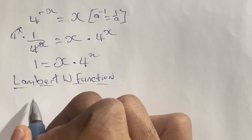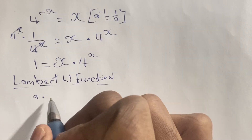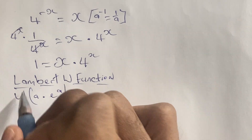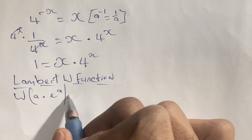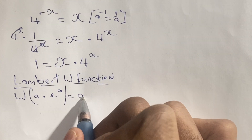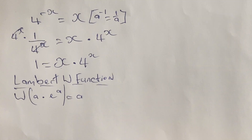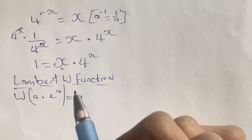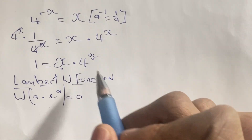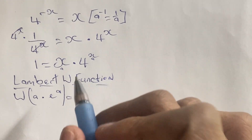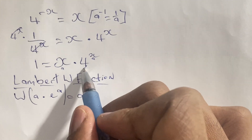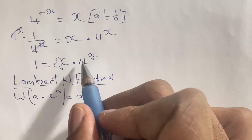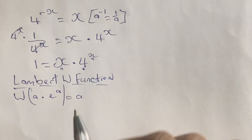How this function works: if we have an expression such as a times e to the power of a, and we apply the W function to this expression, our result is a. For this function to work we need an expression of the form a times e to the power of a. In our equation we have a in the base and a in the power, but we don't have e — we have a 4 instead, so we need to write this 4 in terms of e.